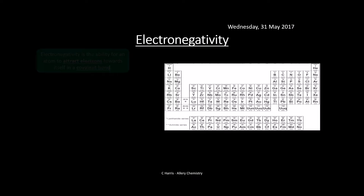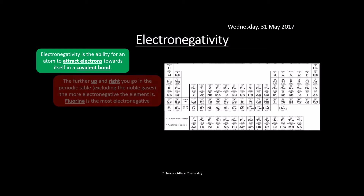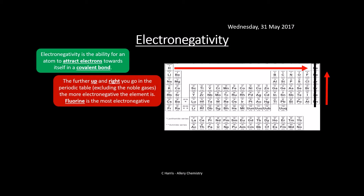Let's start and look at electronegativity. Electronegativity is the ability of an atom to attract electrons towards itself in a covalent bond. The further up and to the right we go in the periodic table — excluding group 8 — the more electronegative the element is. So fluorine would be the most electronegative element in the periodic table.